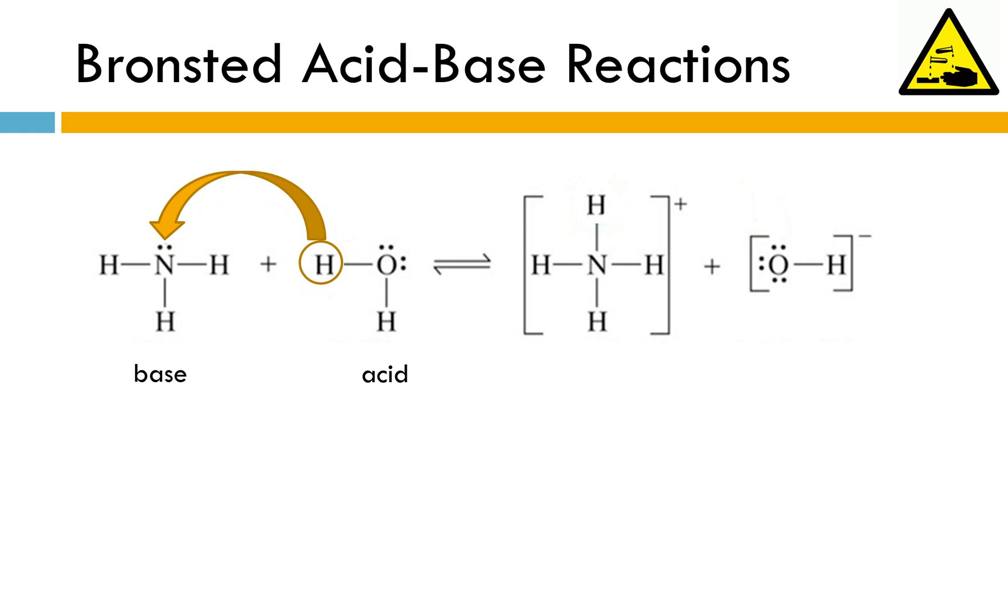So remember Bronsted-Lowry bases don't have their own hydroxides to produce. They're usually going to get a hydroxide ion in solution by taking a hydrogen away from water. This is a weak base so we have a reversible reaction. We could take the hydrogen that ammonia had picked up and transfer it back to the hydroxide ion and reform ammonia and water. That would mean in the reverse reaction we see ammonium NH4+ behaving as what's called a conjugate acid and hydroxide is behaving as our conjugate base.